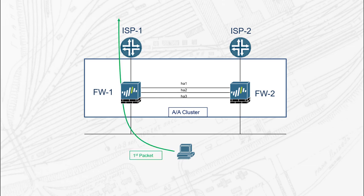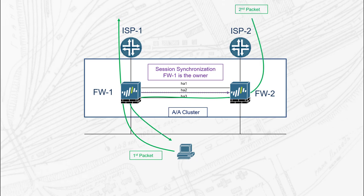When the first packet of a session hits firewall number 1, a session synchronization message will be sent to firewall 2 via the HA2 link. This message informs firewall 2 that firewall 1 is the owner of a new session involving the client. Now when the returning traffic hits firewall number 2, it is aware of this existing session and will send the second packet to the session owner via the HA3 link.